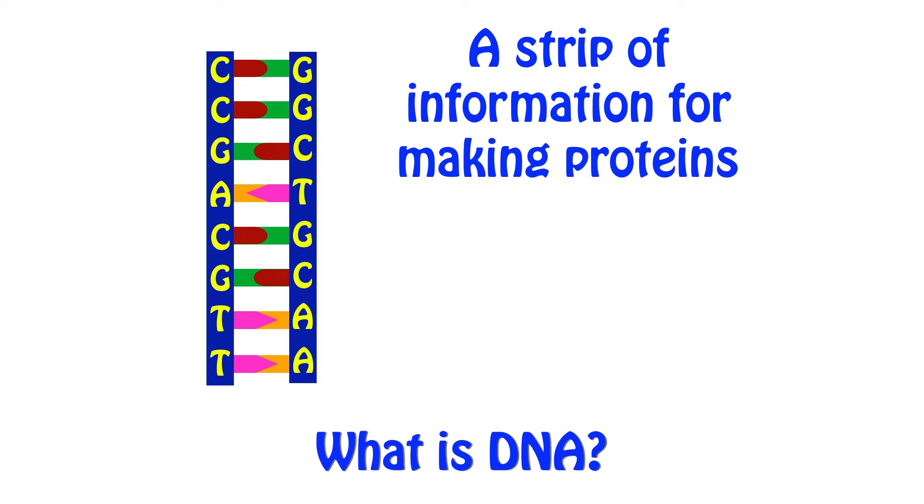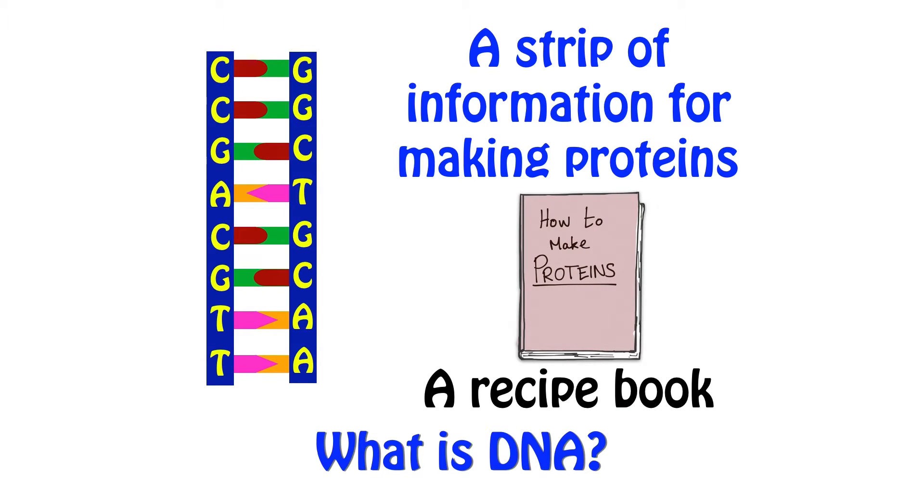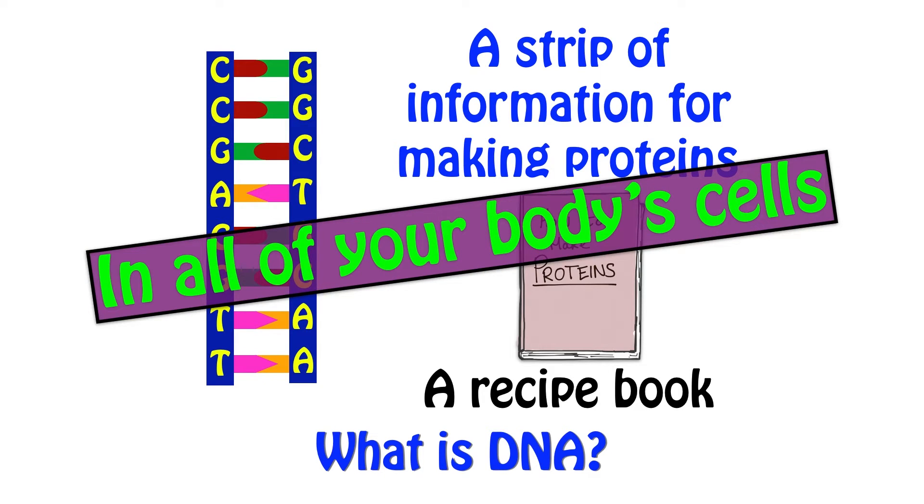DNA is basically the strip of information that tells your body how to make these different proteins. It's made in this kind of shape with these C's and G's and A's and T's, and the order in which they are present determines which proteins are made. It's convenient to think about DNA as a recipe book. It's the recipe book that tells your body how to cook these different proteins. And this information is present in all of your body's cells.